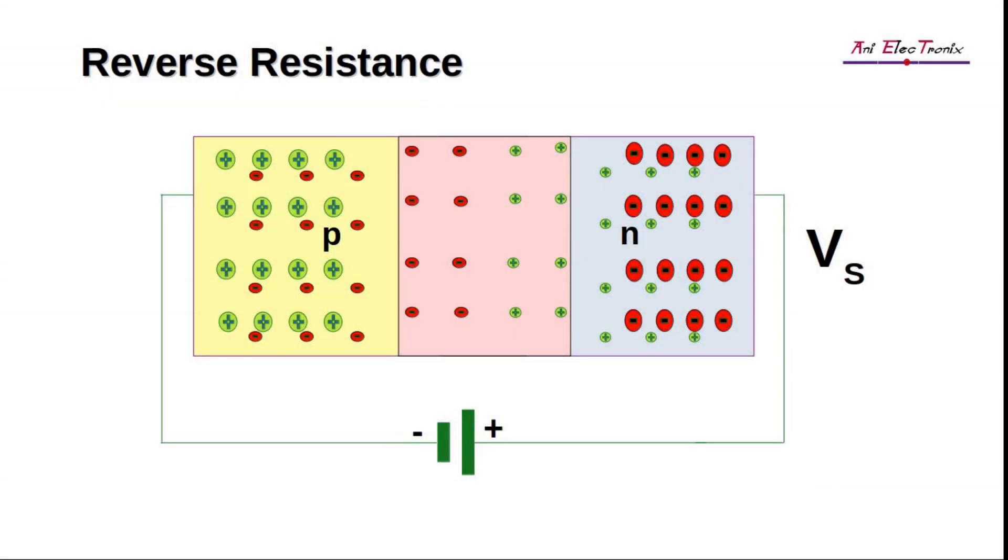A P-N junction diode's reverse resistance is what it offers when it undergoes reverse bias. As the reverse bias voltage is increased, the depletion region becomes wider. The depletion region has therefore blocked a significant amount of charge carrier flow.